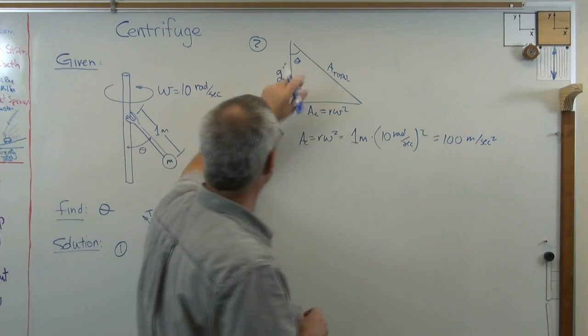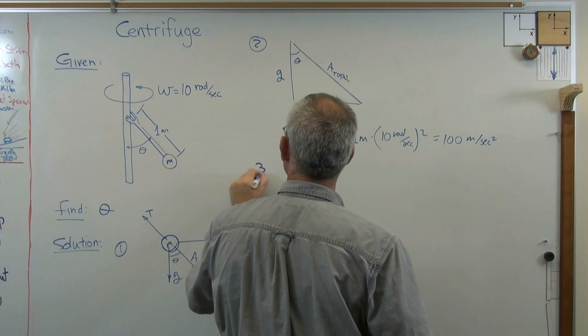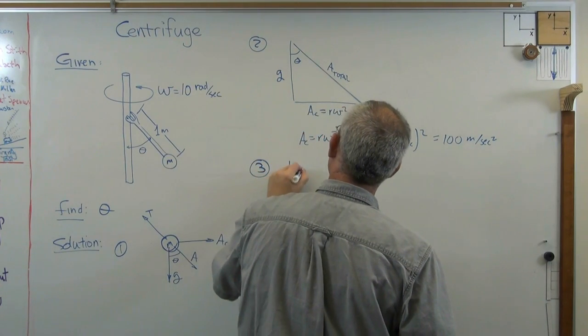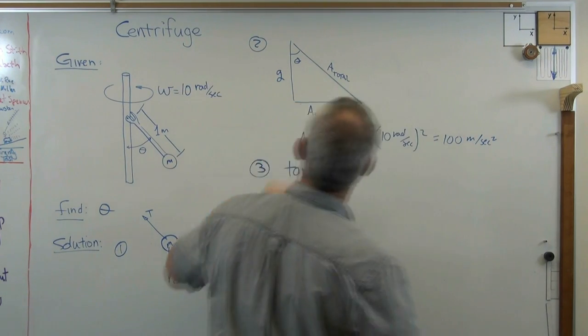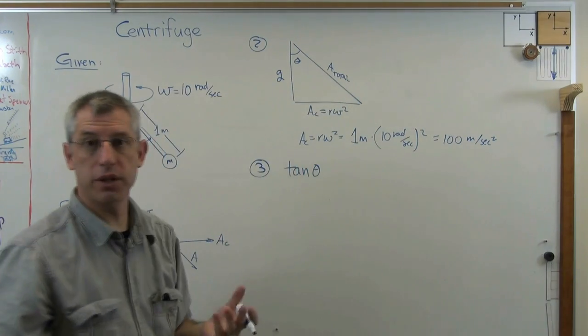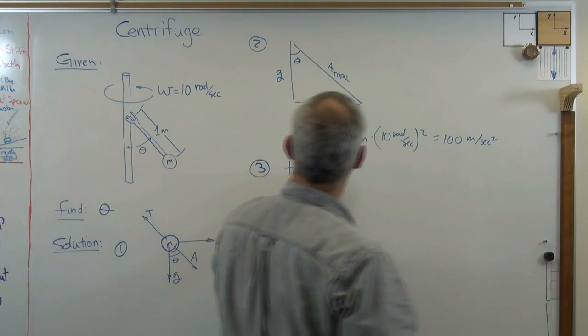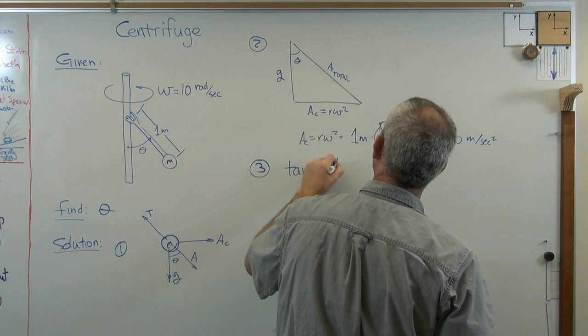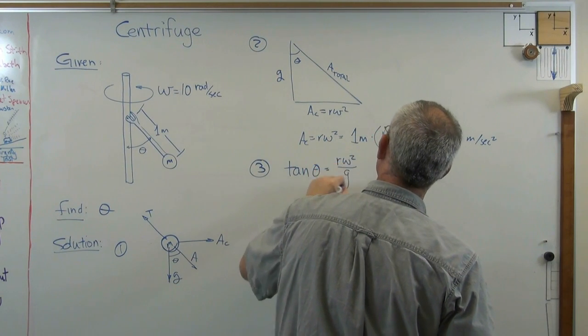So, got that. All I need now is theta. Well, that doesn't look too hard. Tangent theta is, let's see, opposite over adjacent gives me tangent. So, that's going to be r omega squared over G.